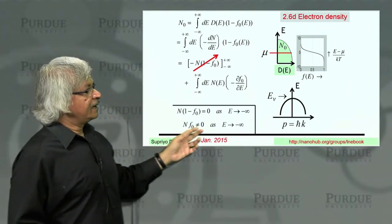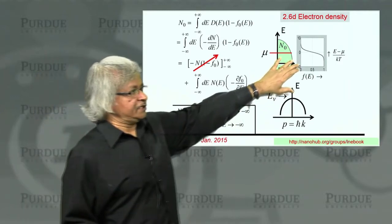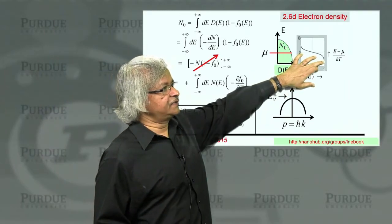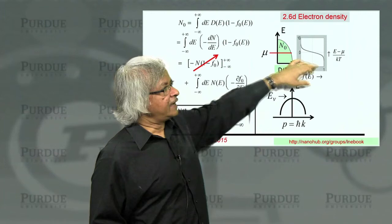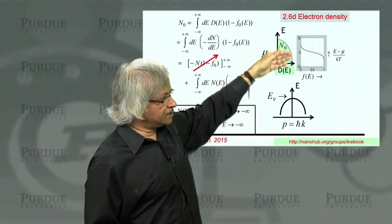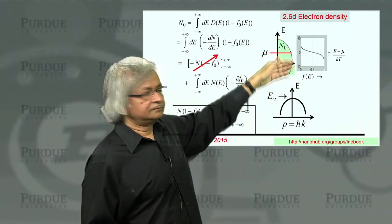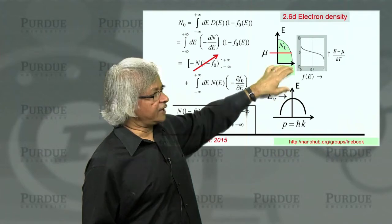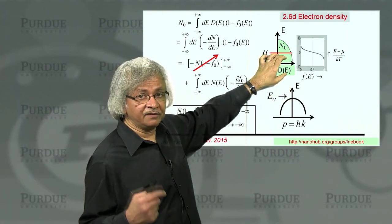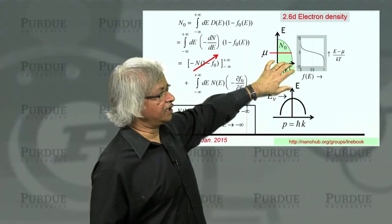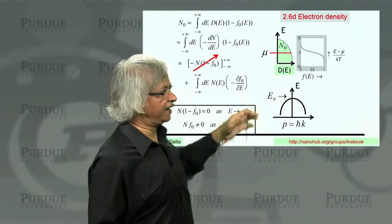Because, as I said, when you go to very low energies, F0 is 1, and N is still increasing. So N is not zero, not like the previous case where I could say that when there are very low energies N is zero, and so NF0 is zero. So here NF0 is not equal to zero.